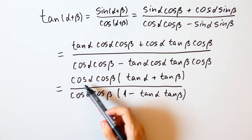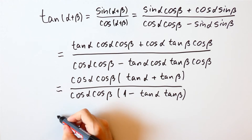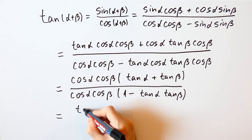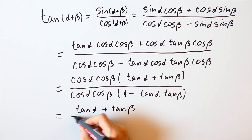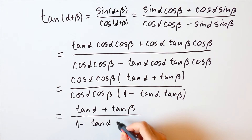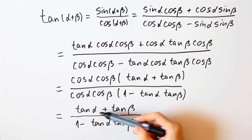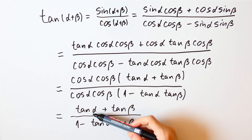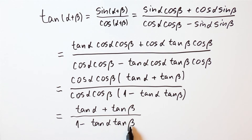The cosine of alpha times the cosine of beta cancel out, so we get that this is equal to the tangent of alpha plus the tangent of beta over 1 minus the tangent of alpha times the tangent of beta. But we have to keep in mind that for this to be defined, both the tangent of alpha and the tangent of beta have to be defined, as well as 1 minus the tangent of alpha times the tangent of beta cannot be equal to 0.